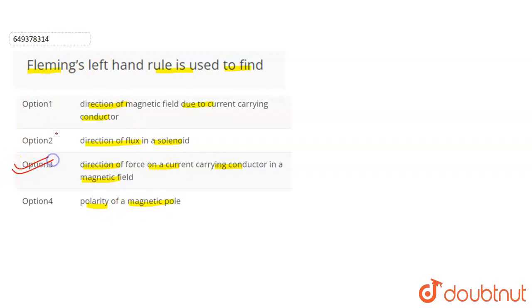Fleming's left hand rule is used to find direction of force on a current carrying conductor in a magnetic field. So if we have a current carrying conductor in a magnetic field, we will have an external magnetic field.